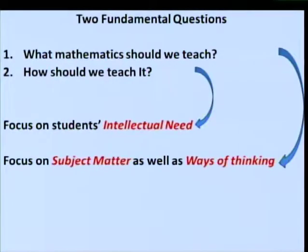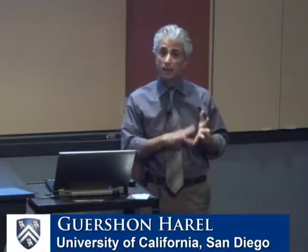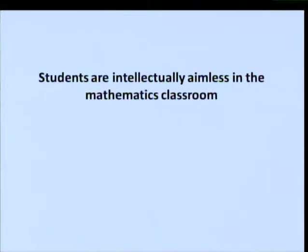If I had to summarize in one sentence my observations across all grade levels — in the last ten years since I moved from Purdue to UCSD, working closely with teachers in junior high, secondary, and high school, as well as post-secondary classes in algebra, calculus, and transition courses — I would say the following: students are intellectually aimless in the mathematics class. They sit there with absolutely no idea what's going on. They might understand a concept locally, but where it is coming from is completely absent.